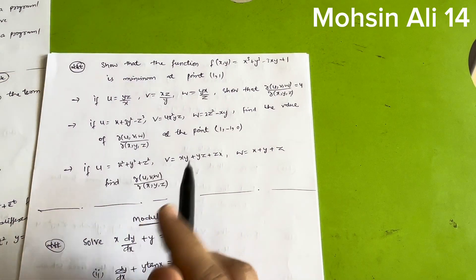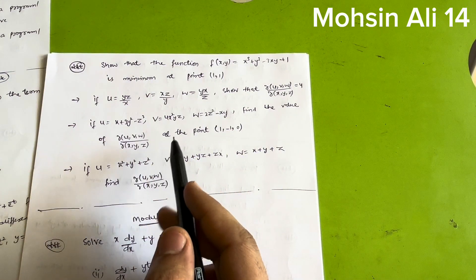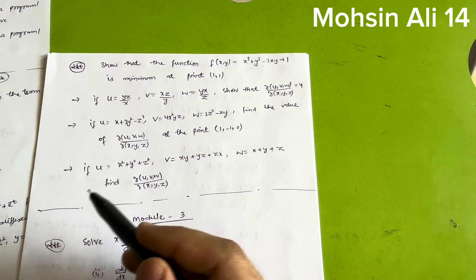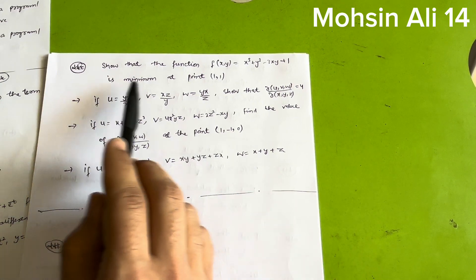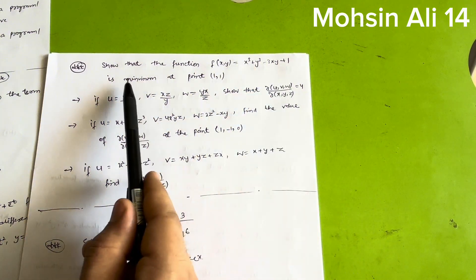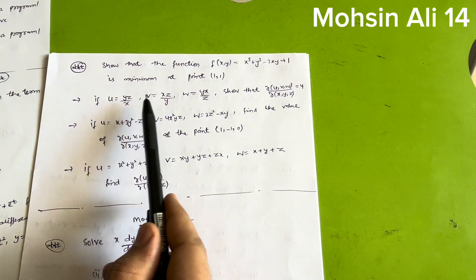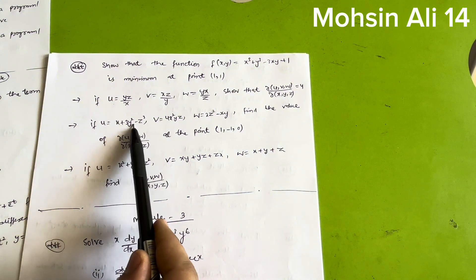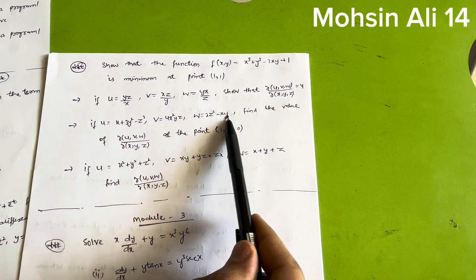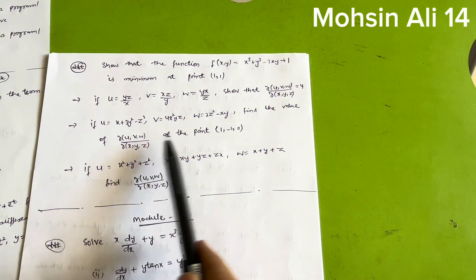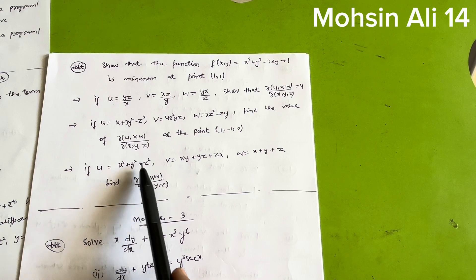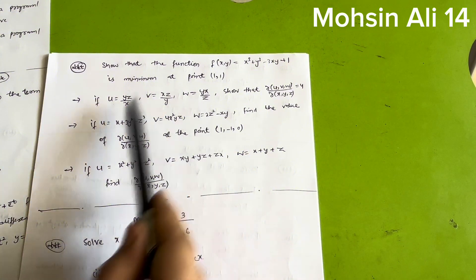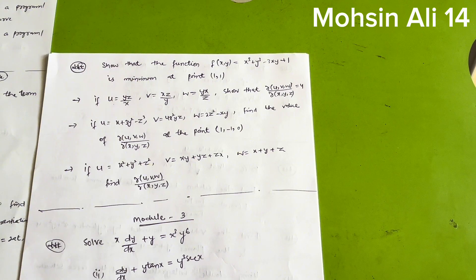Next in Module two, Jacobians are very important and easier ones. Focus on the first chapter only — no need to go to the second chapter. Practice: show f(x,y) = x³ + y³ − 3xy + 1 is minimum at (1, 1); if u = yz/x, v = xz/y, w = yx/z, show that ∂(u,v,w)/∂(x,y,z) = 4; find ∂(u,v,w)/∂(x,y,z) for given u, v, w at point (1, −1, 0); and if u = x²+y²+z², v = xy+yz+zx, w = x+y+z, find ∂(u,v,w)/∂(x,y,z).